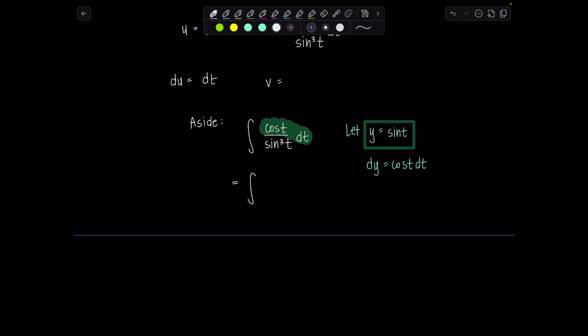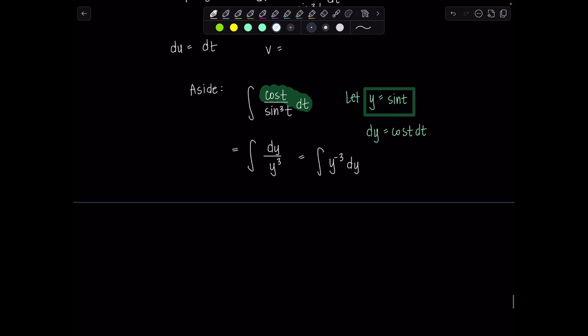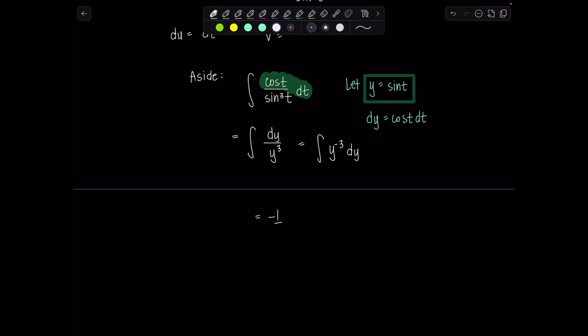So then we have integral dy over y cubed. Perfect. Then rewrite this. This is y to the negative third dy. So far so good. How do we take the antiderivative? Add one to the exponent, divide by the new exponent. Okay, plus c. And then who was y? Y was sine t. So this is sine t to the negative second, which is the same as one over sine squared t. So we could write this as negative one half cosecant squared t plus c.